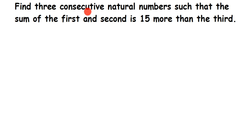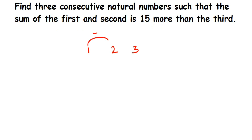If you add the first and second number, it is 15 more than the third. Before we form the equation, let us consider the consecutive natural numbers first. Since we don't know what the numbers are, we have to assume a variable for the first, second, and third number. To understand how, let's take a small example: 1, 2, and 3. If I add 1 to the first number, I get the second number.